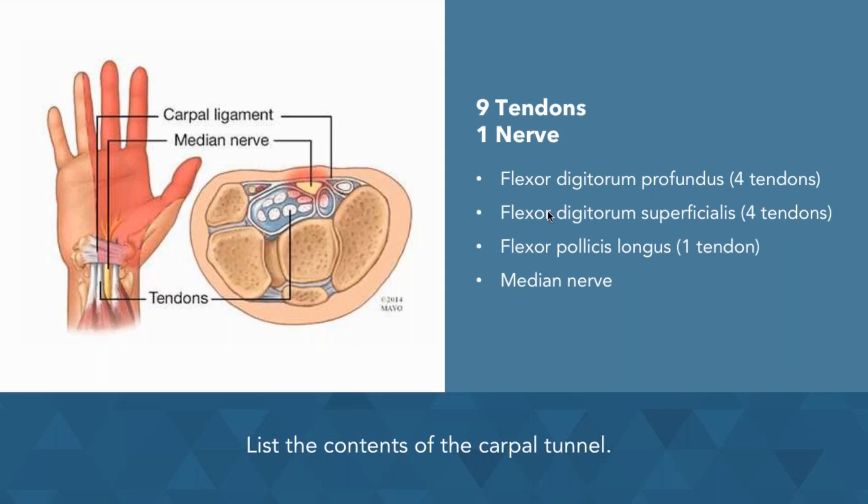We have three separate muscles that go through it, but we have nine tendons — four of which come from the flexor digitorum profundus, and four that come from the flexor digitorum superficialis. The last is the flexor pollicis longus. The nerve that goes through is the median nerve.